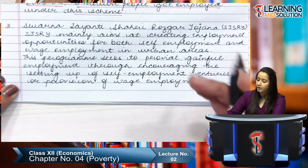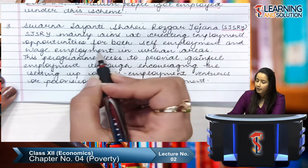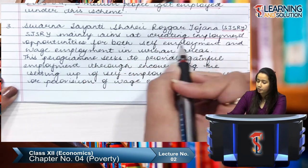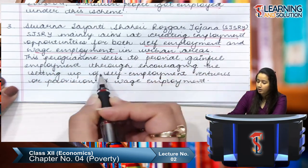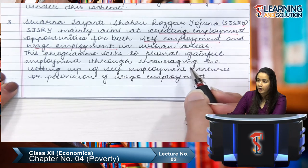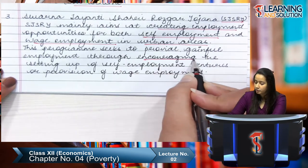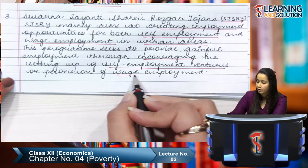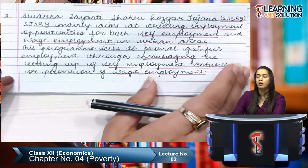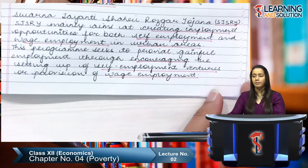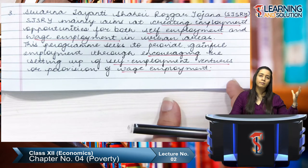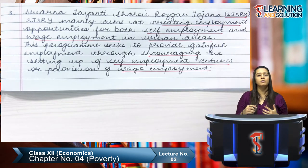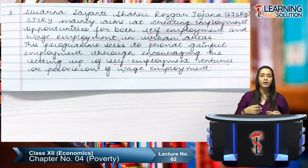The third program is Swarna Jayanti Shahari Rozgar Yojana. This program aimed at creating employment opportunities for both self-employment and wage employment in urban areas. It sought to provide gainful employment by encouraging the setting up of self-employment ventures or provision of wage employment — basically helping people either set up their own business or get employment under someone.